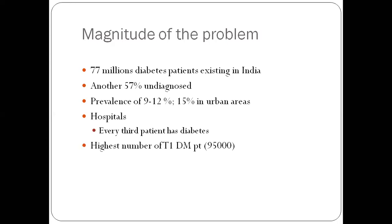It's not just type 2 diabetes, which is the bulk of the disease. India is also home to the largest number of type 1 diabetes patients. There are around 95,000 type 1 diabetes patients in India, which is the highest number in the world.